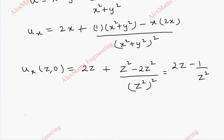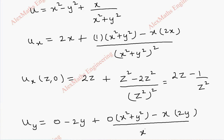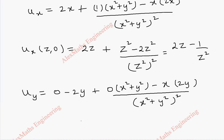In the same way, we are going to find uy, which is the partial derivative of φ with respect to y. The first term is 0 minus 2y. Here again using the quotient rule, the numerator differentiation is 0, and the other term is the denominator kept as it is, minus numerator into differentiation of the denominator which is 2y, all divided by (x² + y²) whole square. Now evaluating uy at (z, 0) — wherever y appears we substitute 0 — so everything becomes 0.